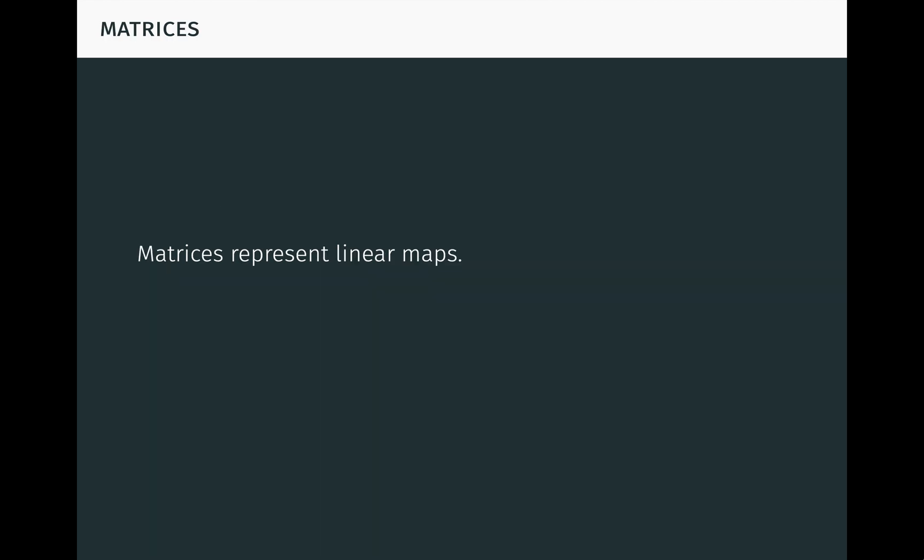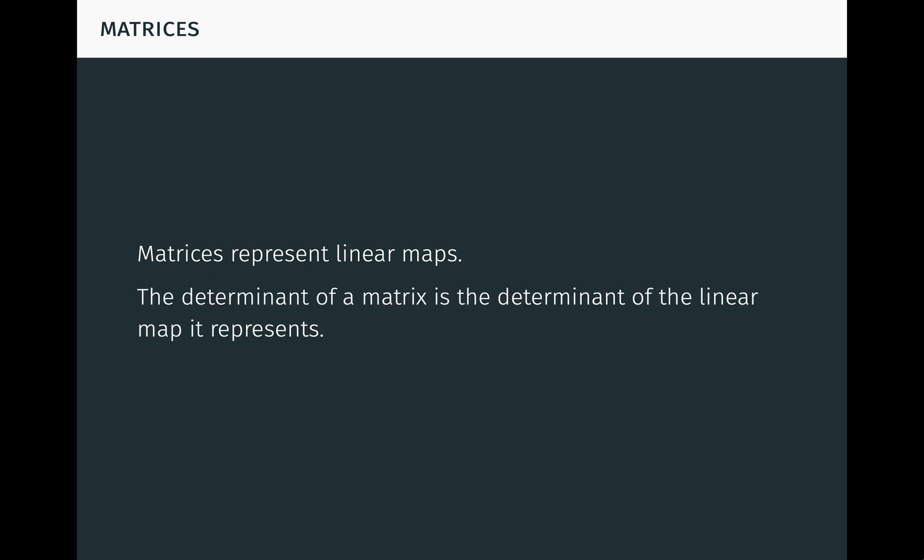To do this, we first recall that matrices represent linear maps. I assume you're probably already familiar with this fact from linear algebra, but we'll review it briefly in a moment. We'll see that the determinant of a matrix is just the determinant of the linear map it represents. Let's get started and dive into the details.